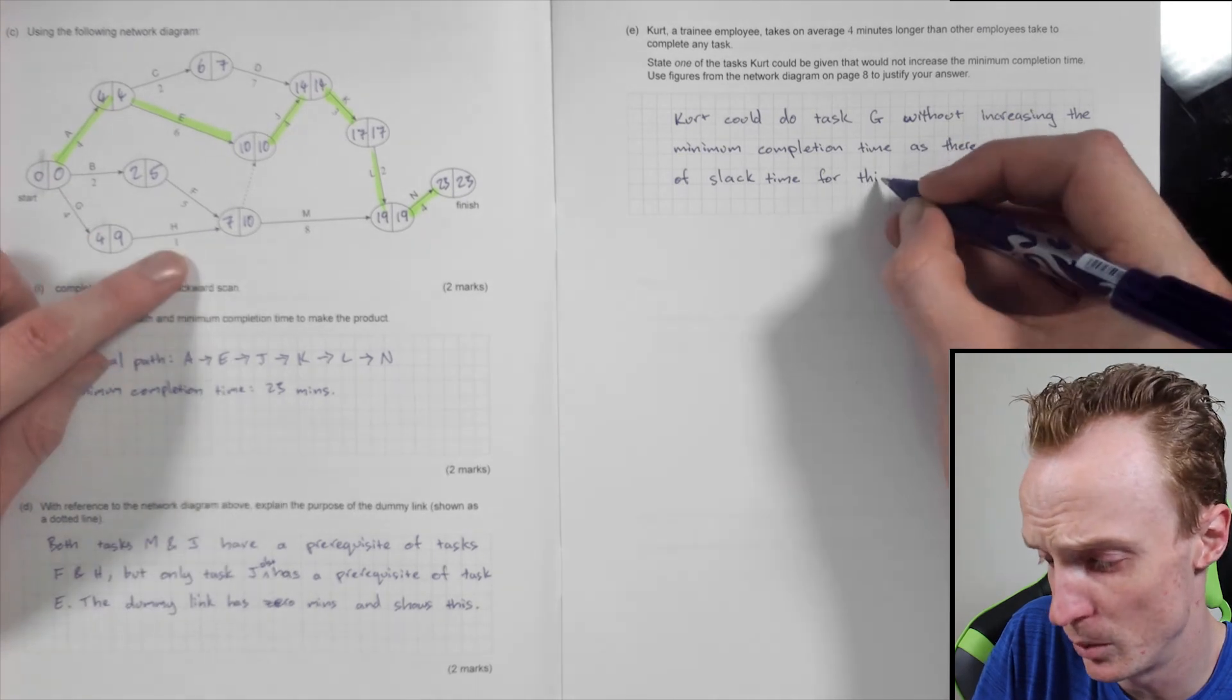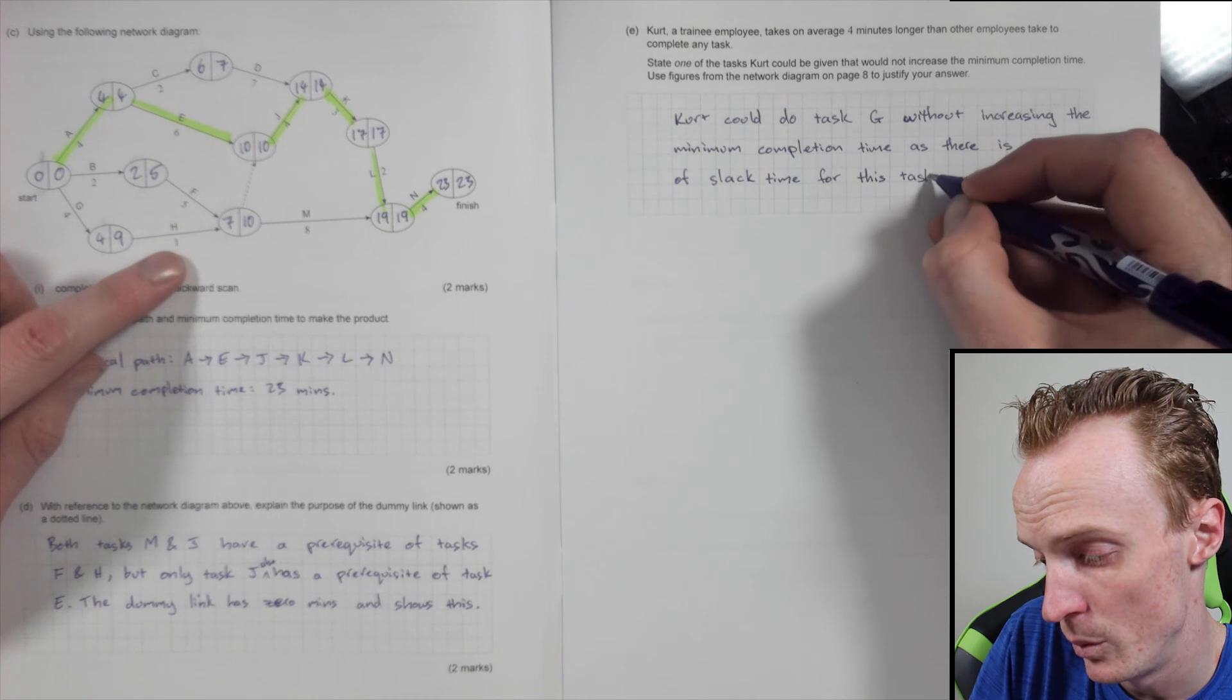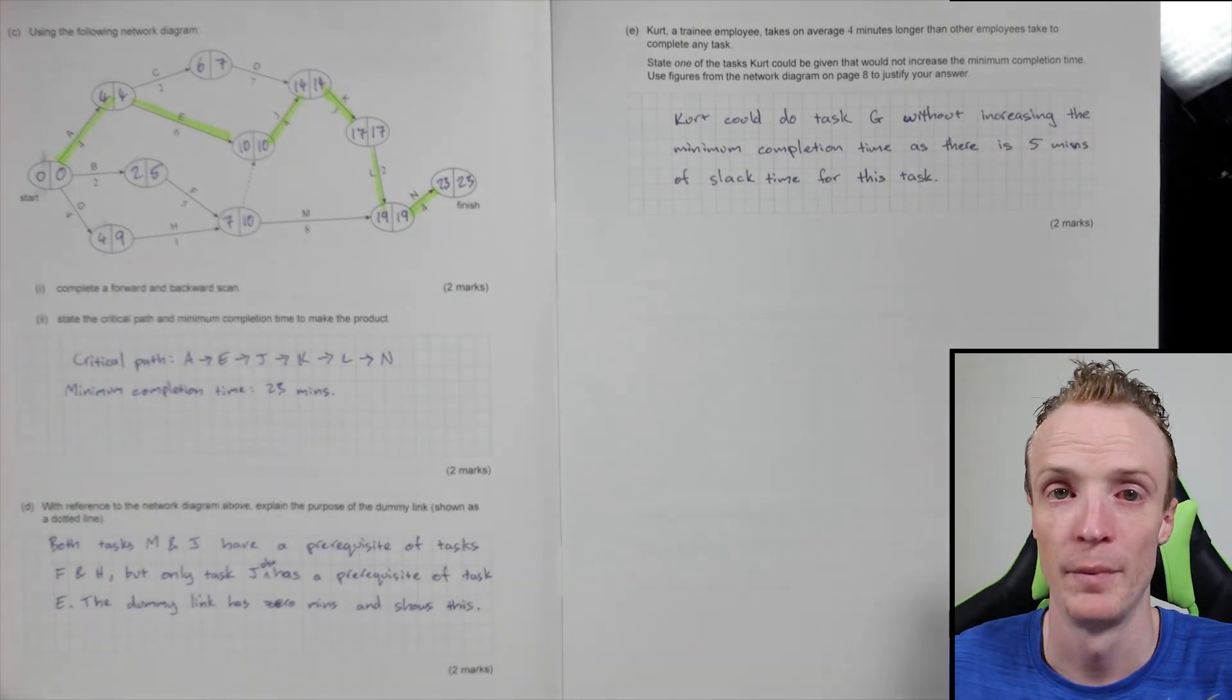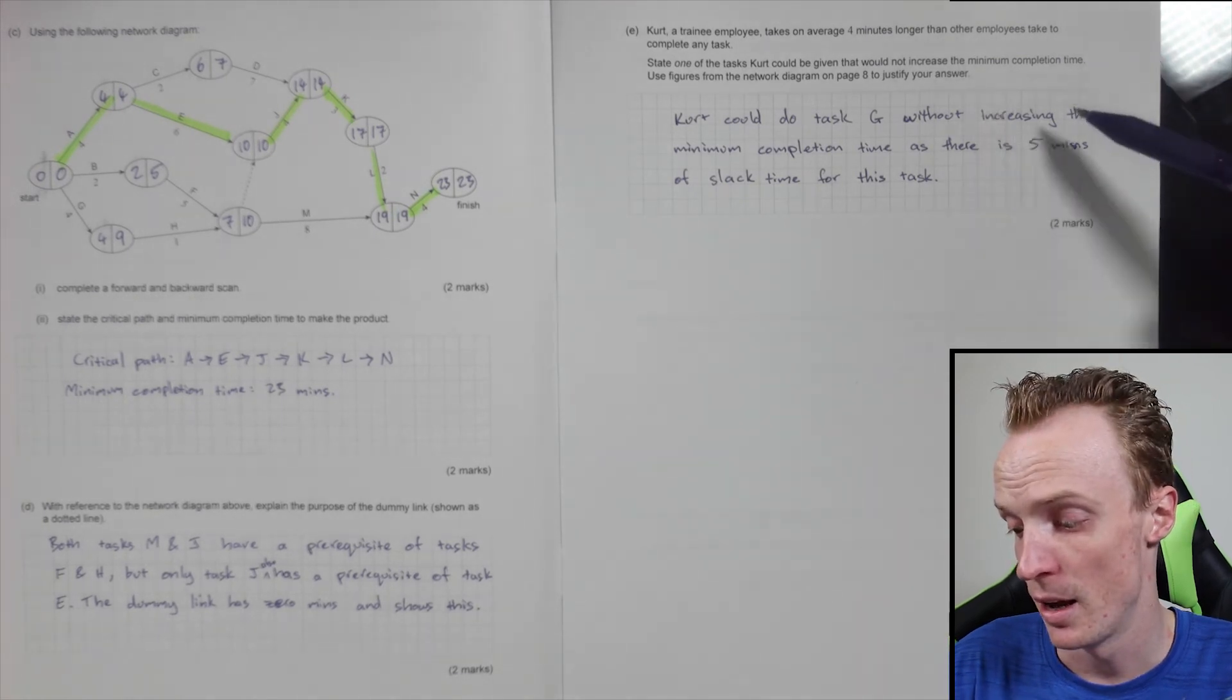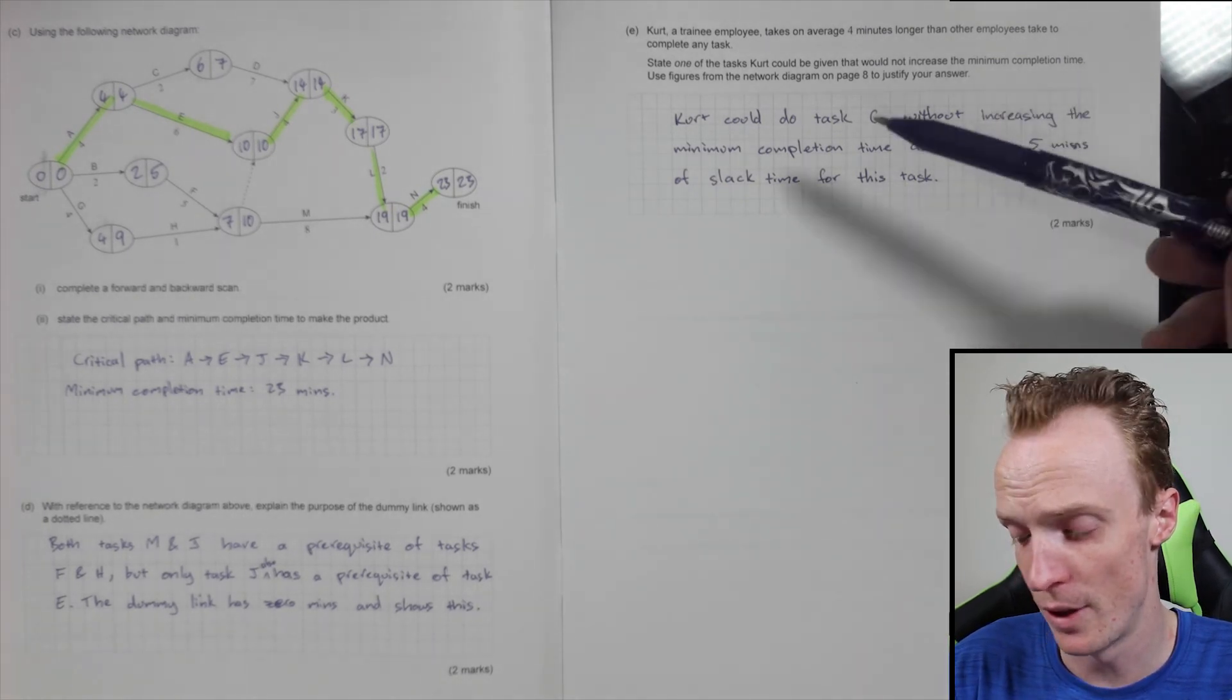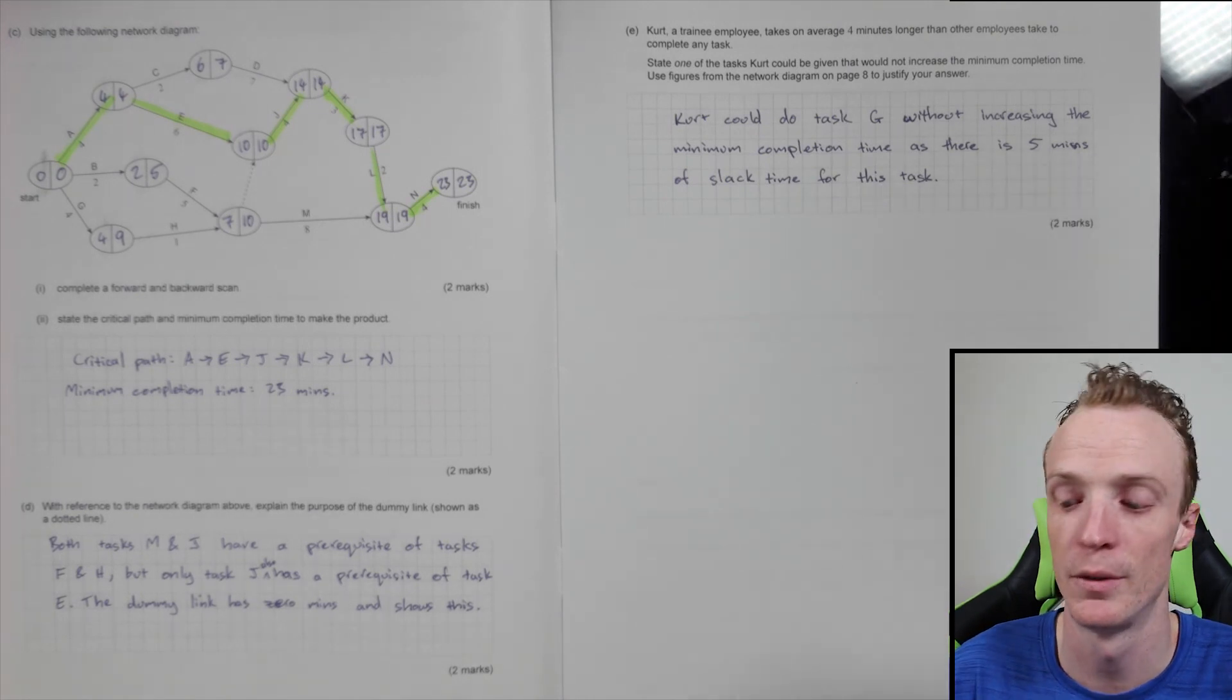You could give him task H as well, for example. So there's more than one without it delaying the overall task. So as long as you can justify it, you're really looking for your actual calculation of slack time there and identifying that slack time.